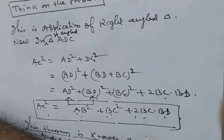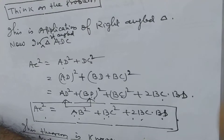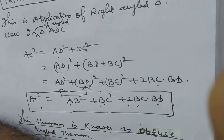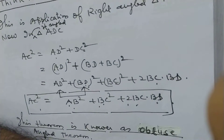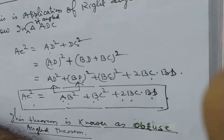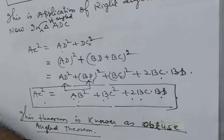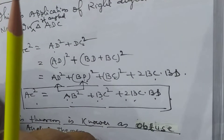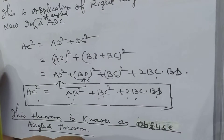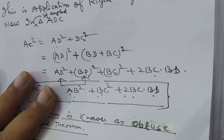And AD² + BD² is equal to AB². So AC² = AB² + BC² + 2·BC·BD. This theorem is known as the obtuse angle triangle theorem because angle ABC is greater than 90 degrees. You should know the result and also the name of this theorem, as this problem may be asked in the examination independently.